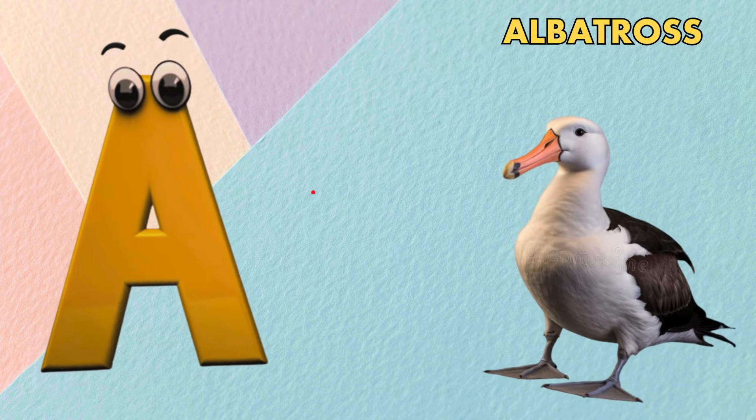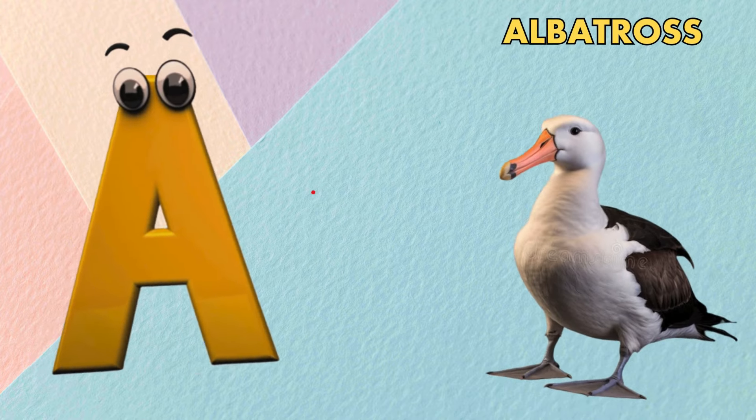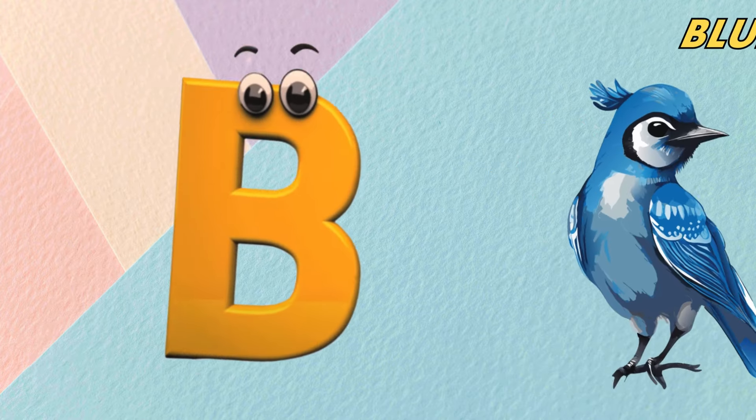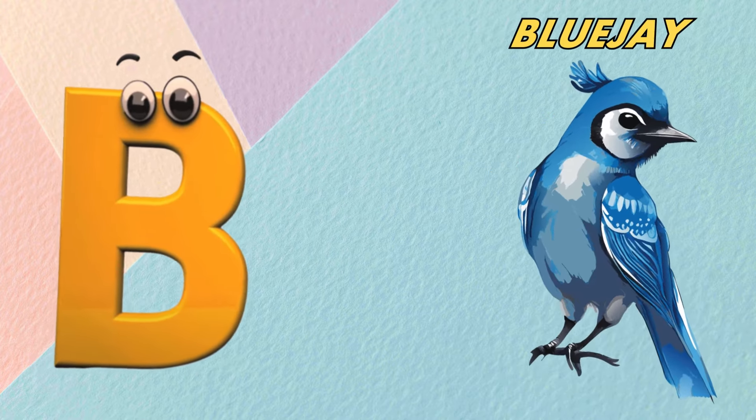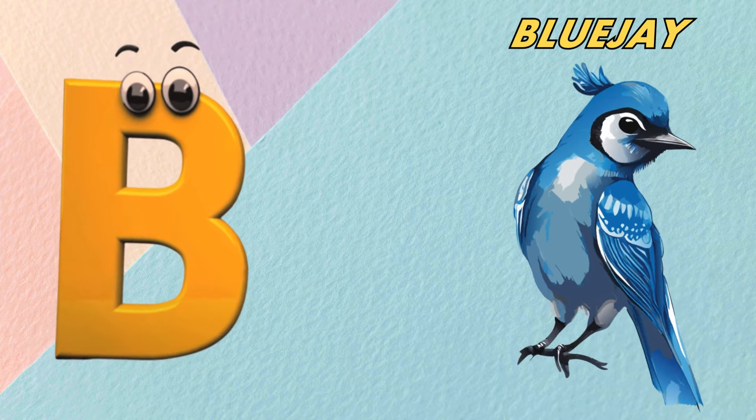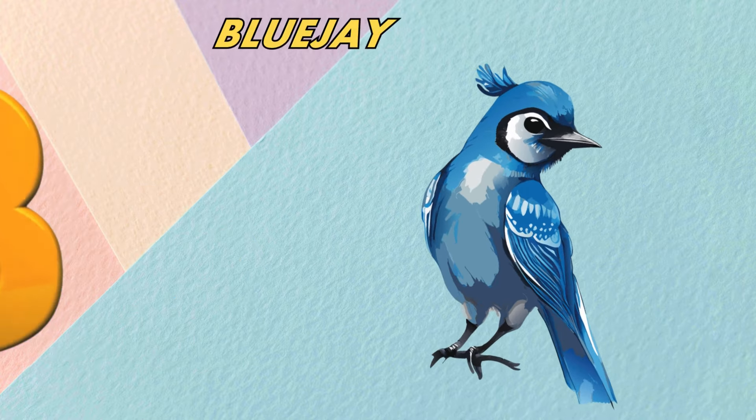A is for albatross. Ah, albatross. B is for blue jay. V, blue jay.